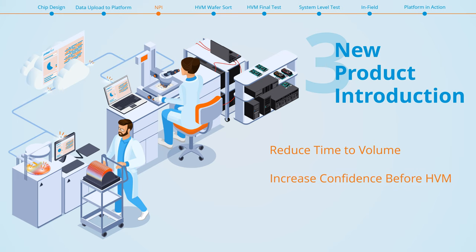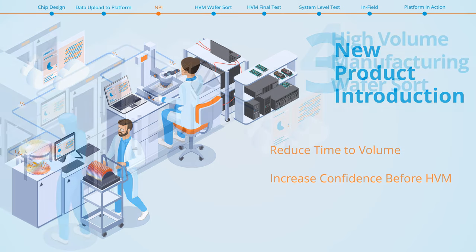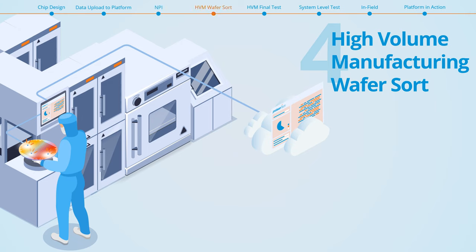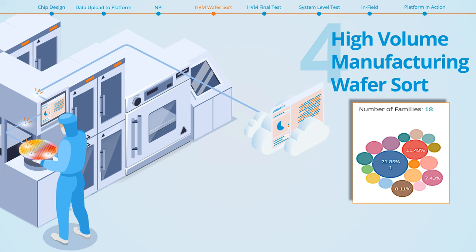This same data is used to enable further correlation between wafer sort, final test and system-level testing prior to high-volume manufacturing. During high-volume manufacturing, agent readouts enable the classification of chips into families that behave within a one-sigma distribution across many parameters and all operating conditions.